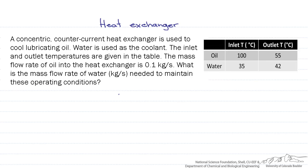In this system, we're going to be given the outlet temperatures of both the oil and the water, and the inlet temperatures of the oil and the water, as well as the mass flow rate of the oil. What we need to figure out is what is the mass flow rate of the water going to be to cool this oil by a specific amount.